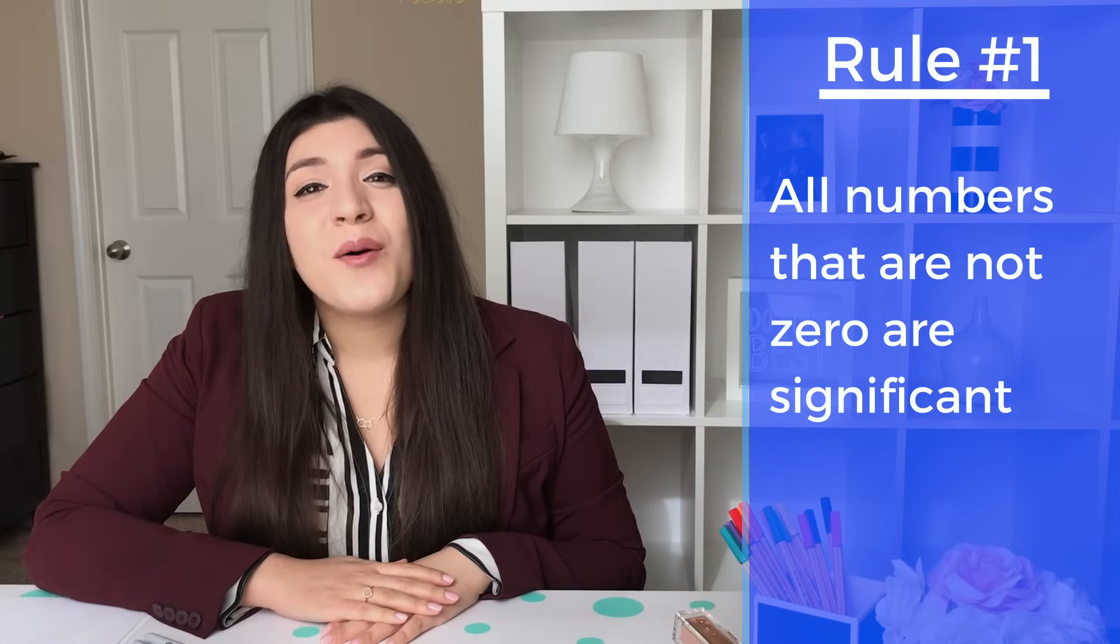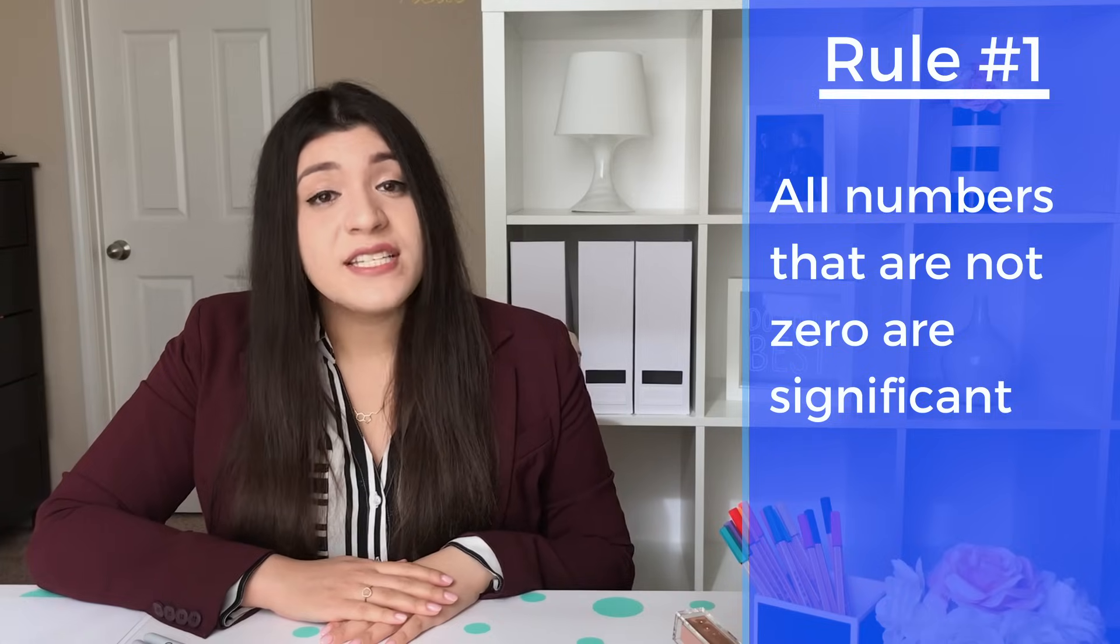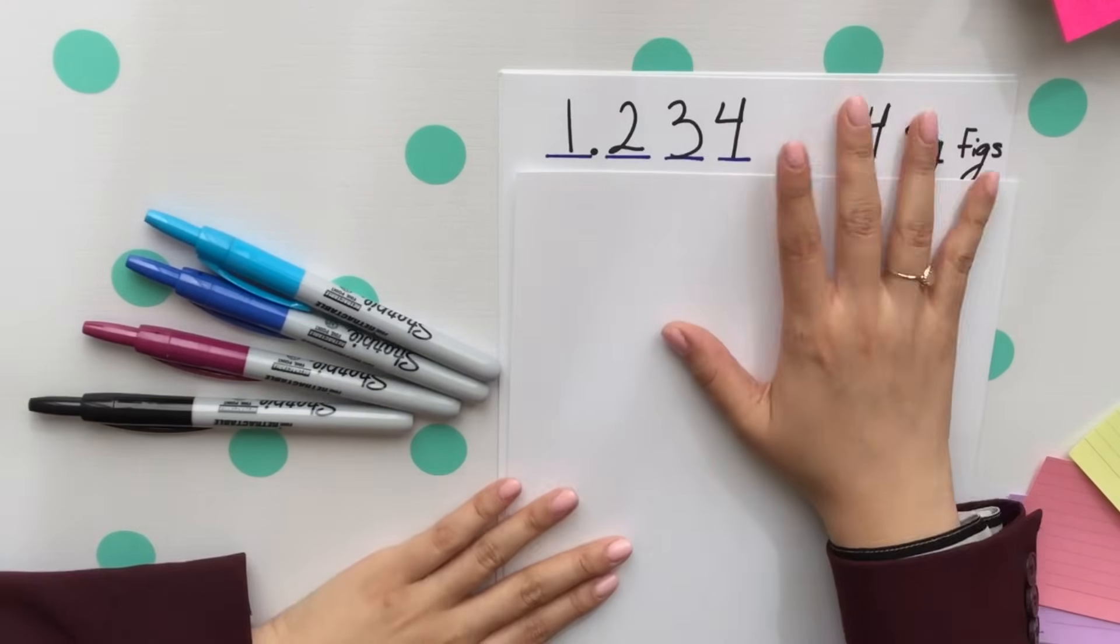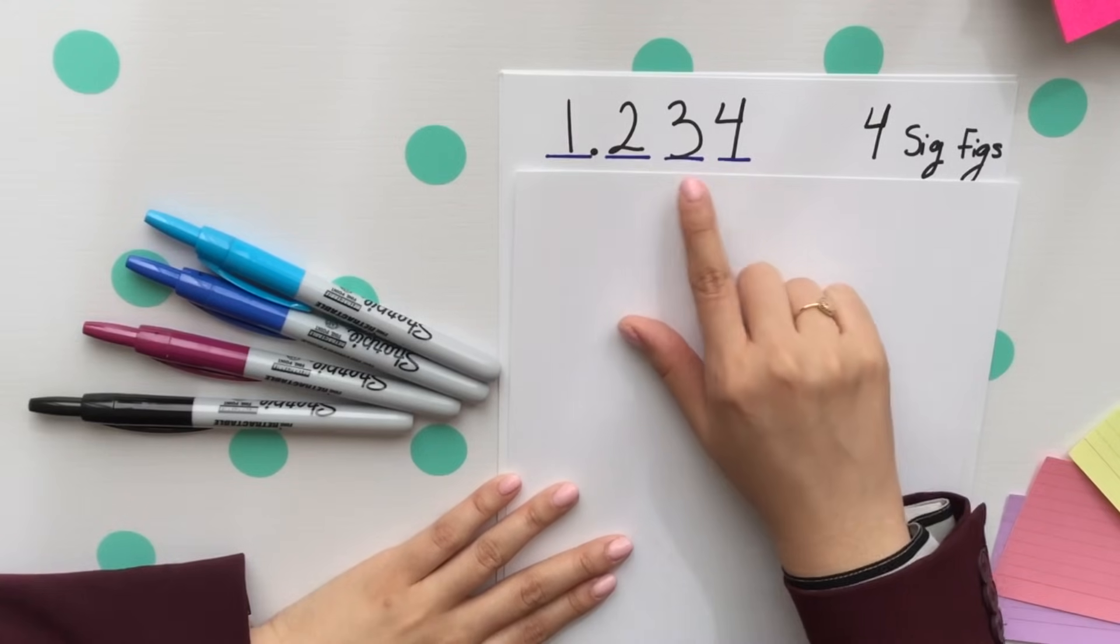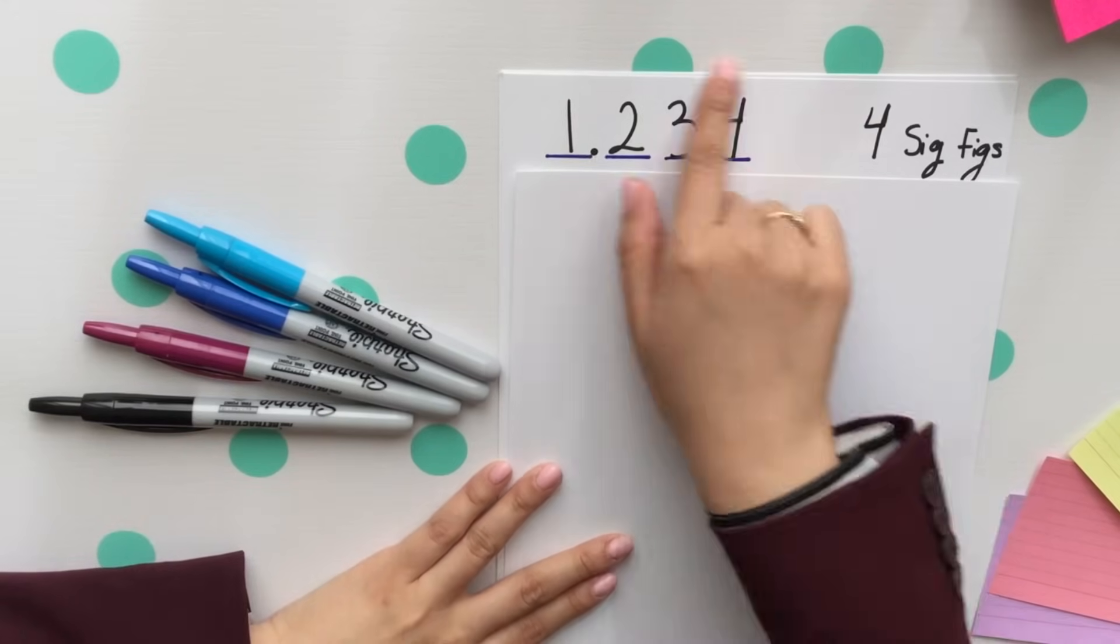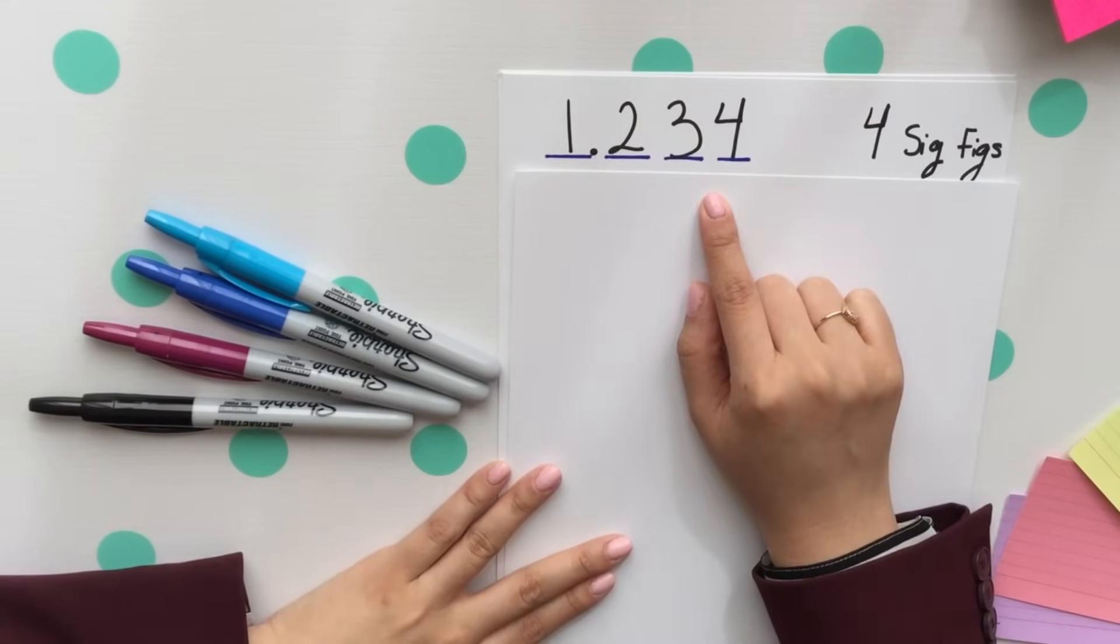Rule number one, all numbers that are not zero are significant. Looking at this first example, every single one of these digits is significant because they are non-zero numbers.